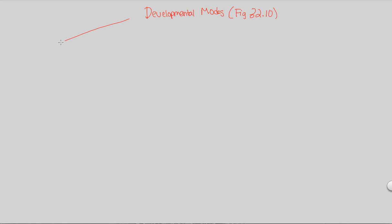The first type of developmental mode on this flowchart — Developmental Modes 2 — would be coelom formation. How does the coelom, that fluid-filled cavity, develop? And if it develops in a certain way, can we classify it further into different patterns?